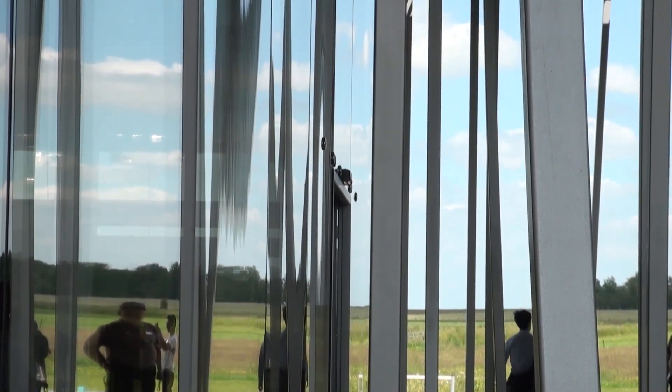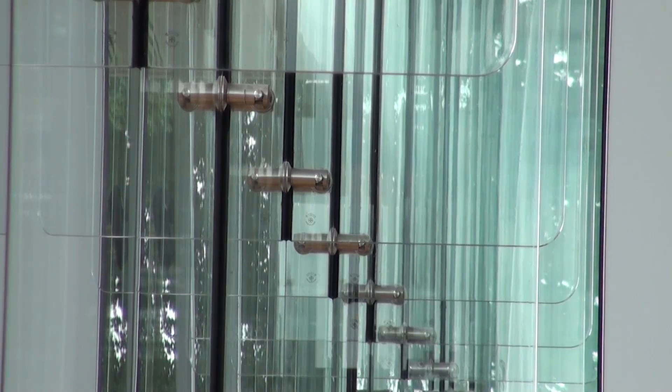Pilkington launched the very first structural glass system, the Pilkington suspended assembly system in the 1960s. With continued research and development on glazing systems and the desire for a clean flush glass facade, we developed the planar system.